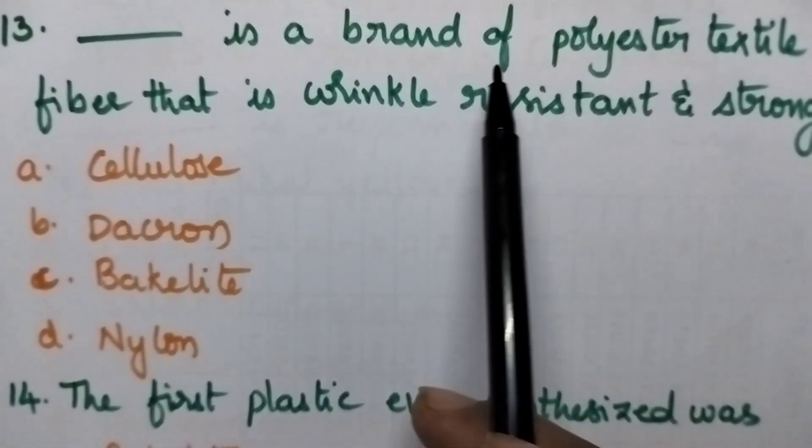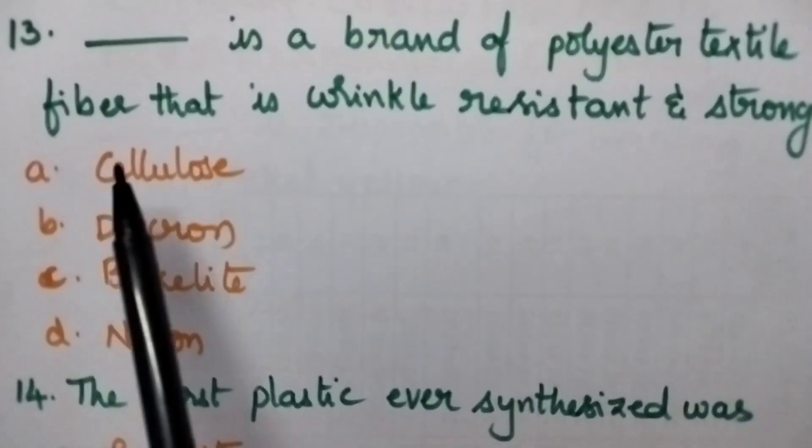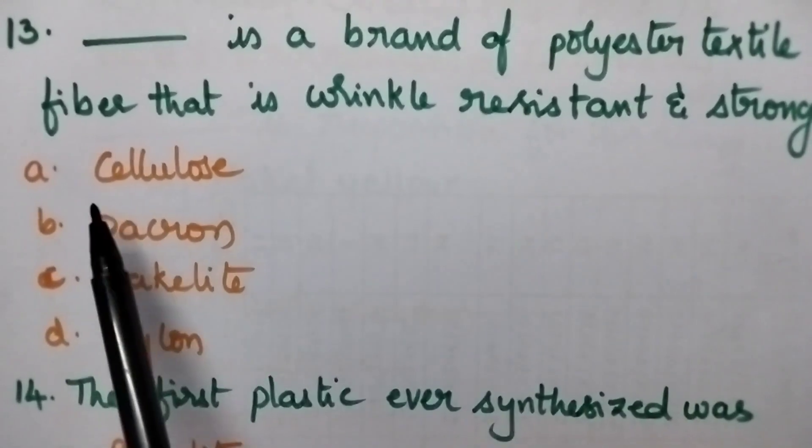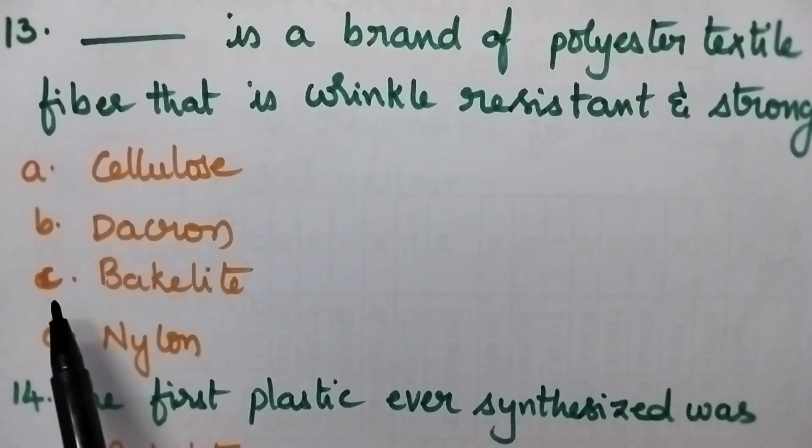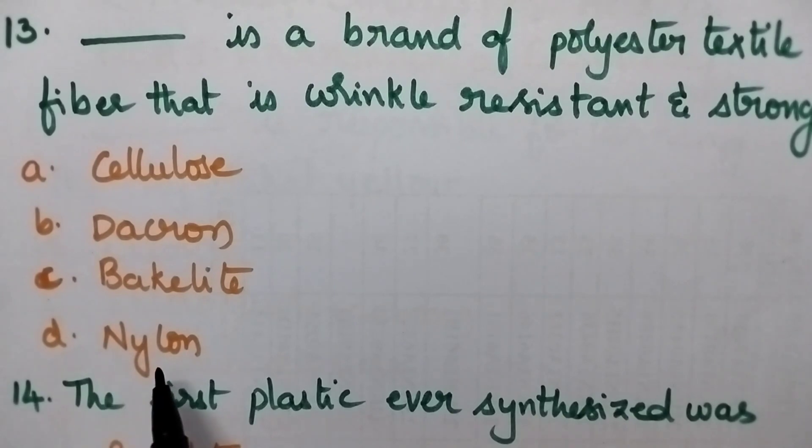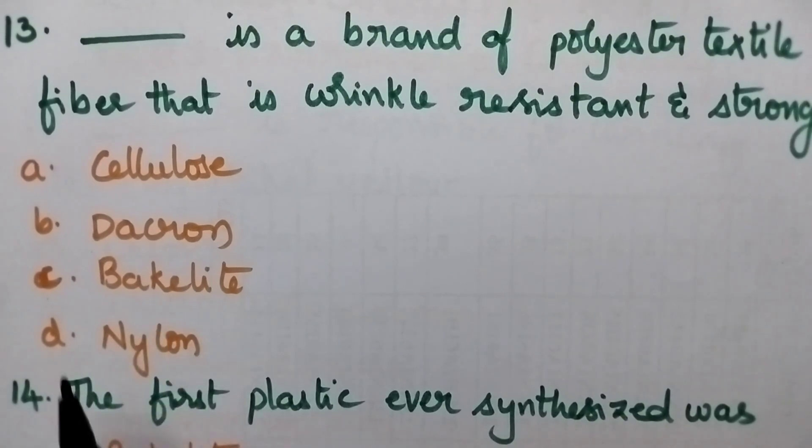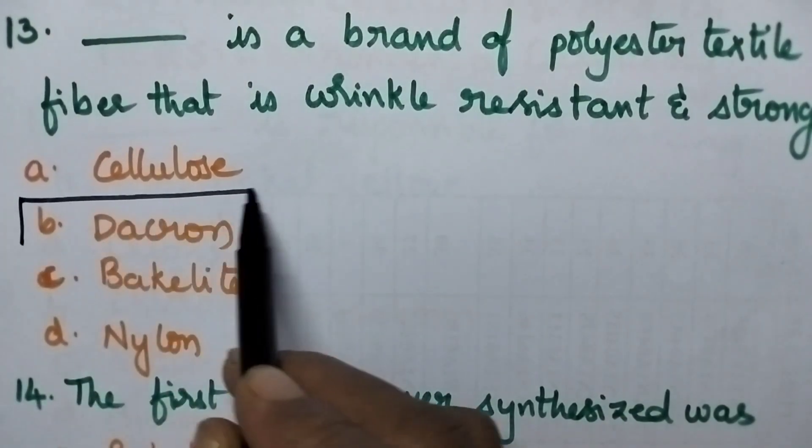Dacron is a brand of polyester textile fiber that is wrinkle resistant and strong. A. Cellulose, B. Dacron, C. Bakelite, D. Nylon. So Dacron is the brand name of polyester textile. So option B is the right answer.